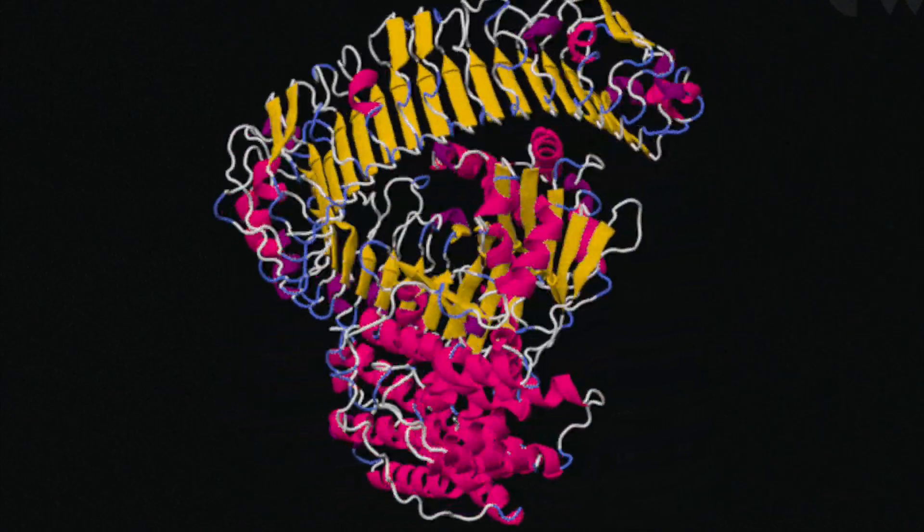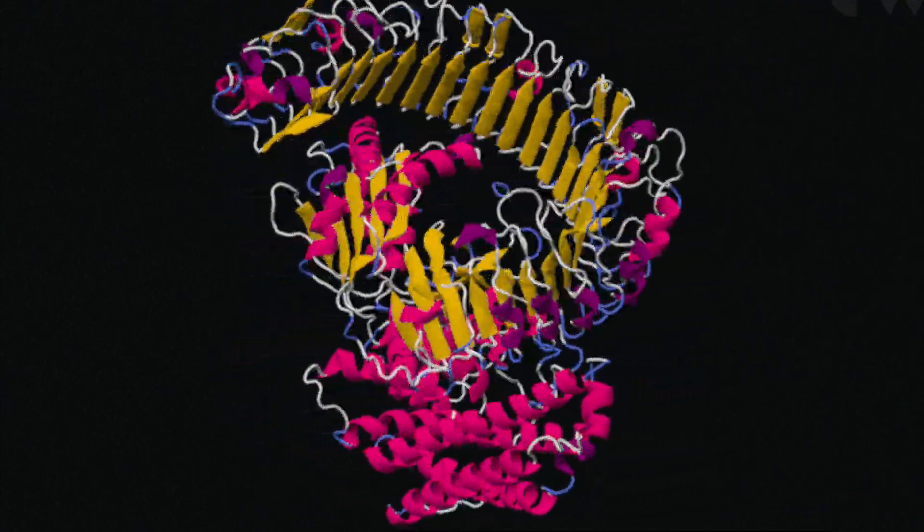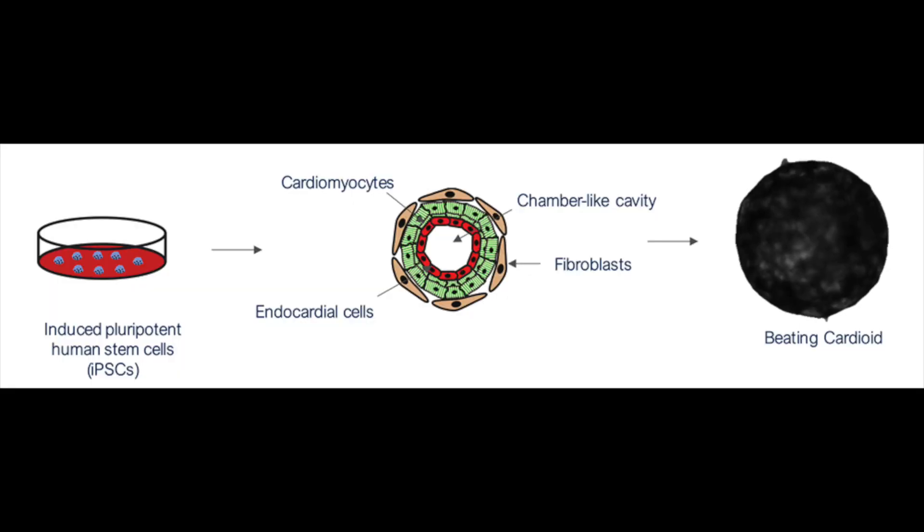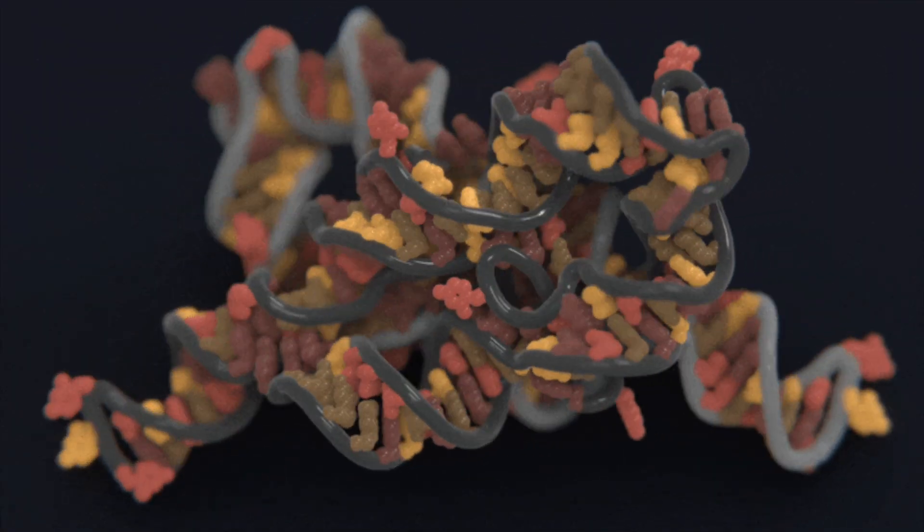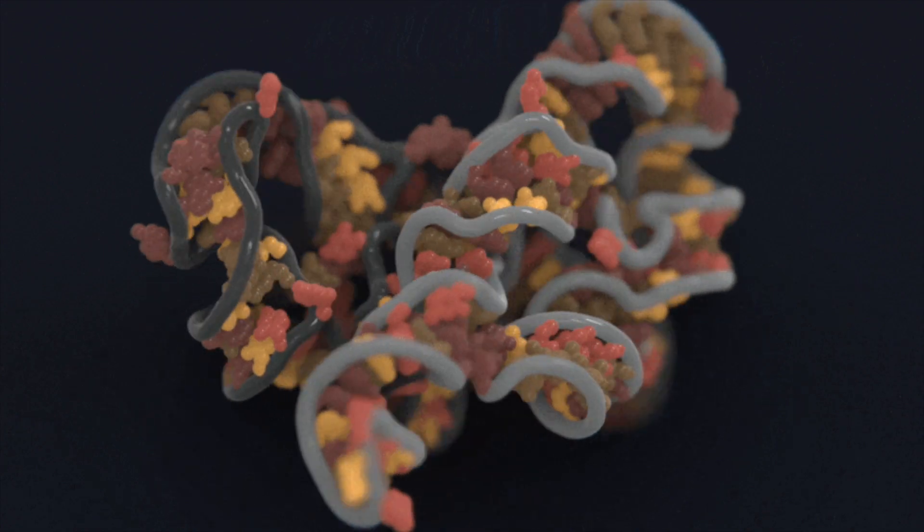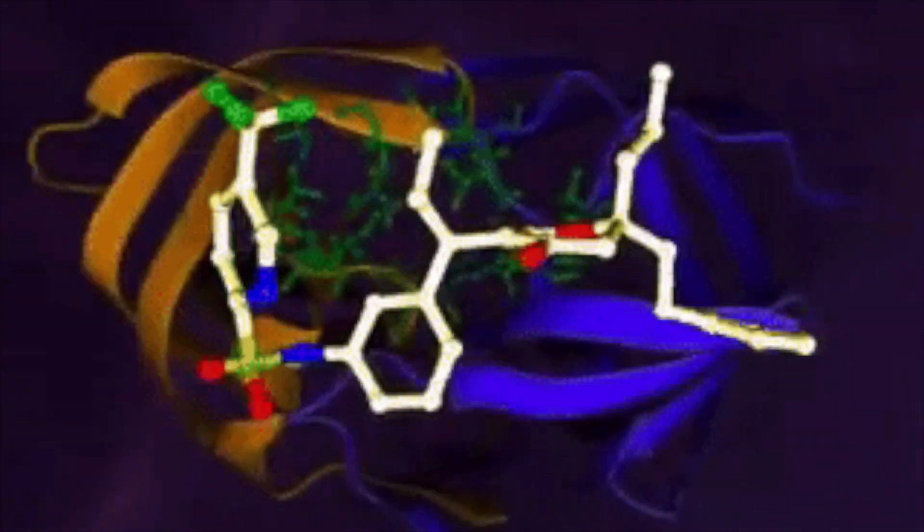But the company has two other drugs partially generated by AI in the clinical stage. One is a COVID-19 drug in phase 1 clinical trials, and the other is a cancer drug, specifically a USP1 inhibitor for the treatment of solid tumors, that recently received FDA approval to initiate clinical trials.